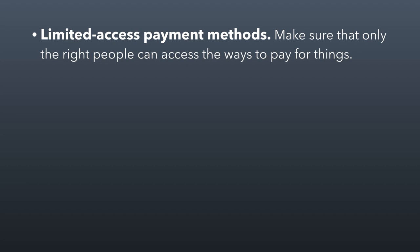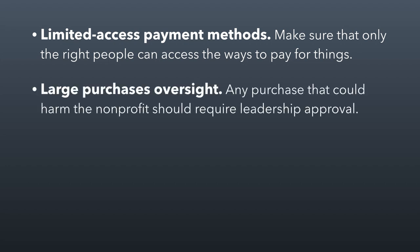Make sure that all your payment methods — checkbooks, credit cards, online accounts — are protected so that only the right people get access to them. Make sure that if there are any large purchases being made, there's oversight involved. It should usually require leadership approval for large purchases, including potentially board approval, either through a finance committee or through the entire board. If a purchase has strategic importance, such that if a large amount was spent and things went wrong it could affect the strategy of the organization, then the board should definitely be involved in that process.